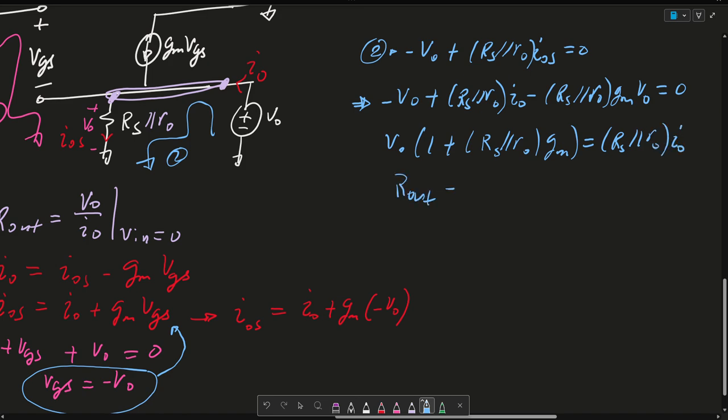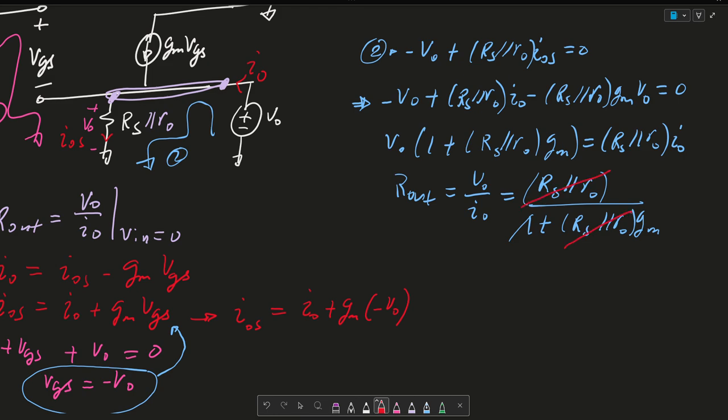We can move everything in the V0 region to the right hand side. We could say then that V0(1 + RS||RO·Gm) equals RS||RO·IO. So then Rout, which equals V0 over IO, is basically RS||RO over (1 + RS||RO·Gm). This one here is negligible, so it can go away, and essentially this will cancel out. So for a common drain amplifier or source follower, we say that Rout is approximately one over Gm.